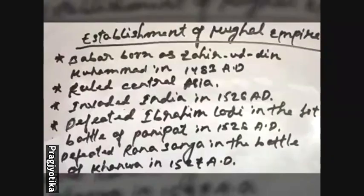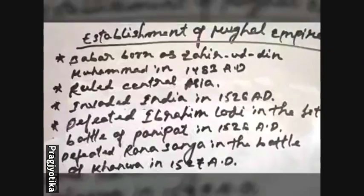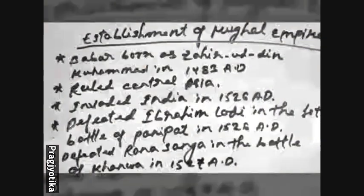Now we will discuss about the establishment of the Mughal Empire. The Mughal Empire was founded or established by Babur in the year 1526. Babur was born as Zahiruddin Muhammad in the year 1483 in Uzbekistan, which was a part of Central Asia. Soon after defeating a few kings in Central Asia, Babur decided to march towards India.